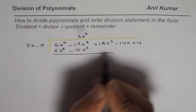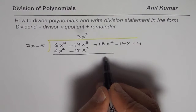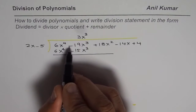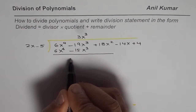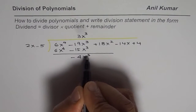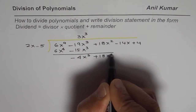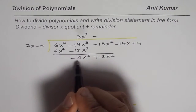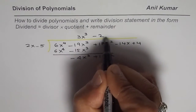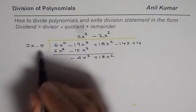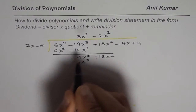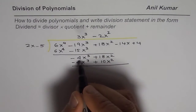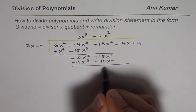Now we take away. Bring down 18x squared. Subtracting 6x to the power of 4 minus 15x cubed from 6x to the power of 4 minus 19x cubed gives negative 4x cubed. Bring down 18x squared. To handle minus 4x cubed divided by 2x, we need minus 2x squared in the quotient. Multiplying gives minus 4x cubed plus 10x squared. Taking away, the first terms cancel and we are left with 18 minus 10, which is 8x squared.